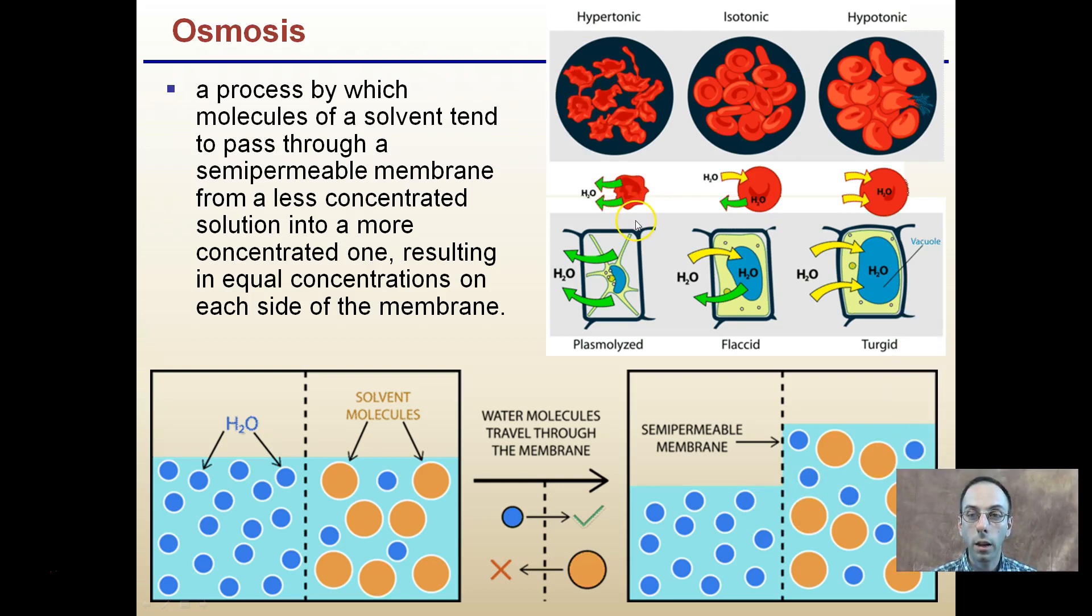Osmosis, as we saw in red blood cells, we could see them causing them to shrivel. Isotonic is when equal water is moving in and out. Hypotonic is when more water is coming in than going out. In red blood cells, they could lyse or break apart. And in hypertonic, think of it like making a pickle. You get that kind of shriveled look to it.